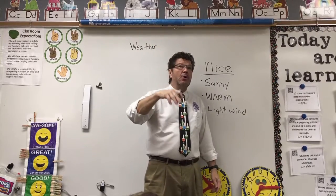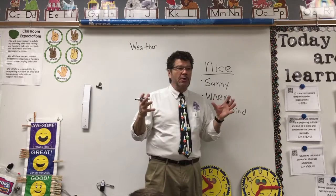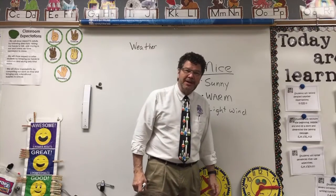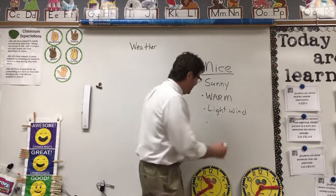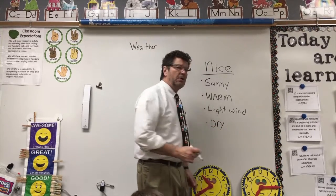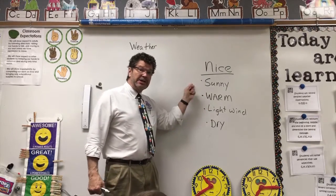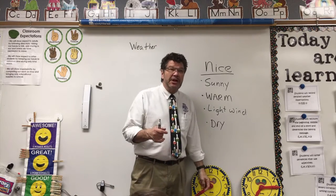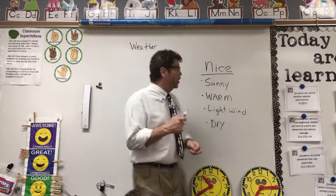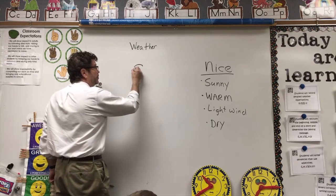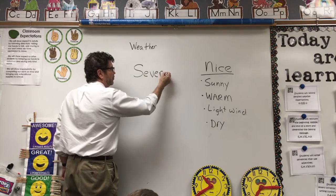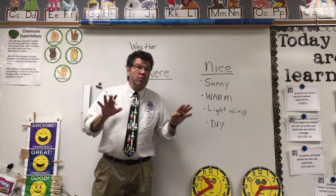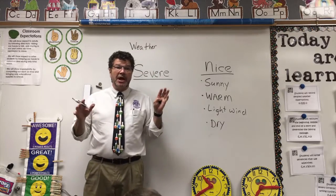What about the stuff that falls from the sky — rain or snow? Is nice weather going to have a lot of rain or snow, or would it be dry? Of course, if you're a frog, nice weather might mean you want rain. So we want it to be dry. Nice weather is usually sunny. What's the opposite of nice weather? There's a science word — we're going to call it severe.